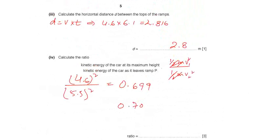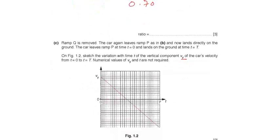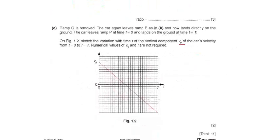The ramp Q is removed. And as the ramp Q is removed, the trajectory becomes longer.